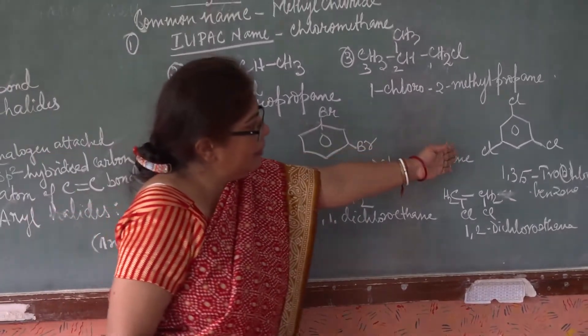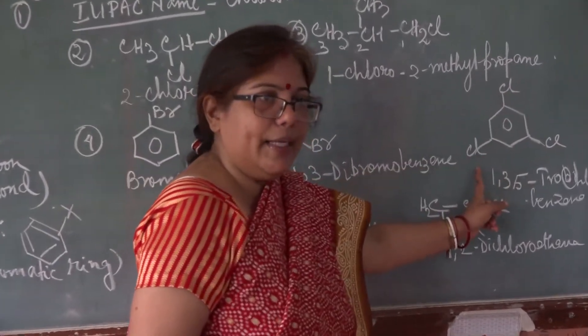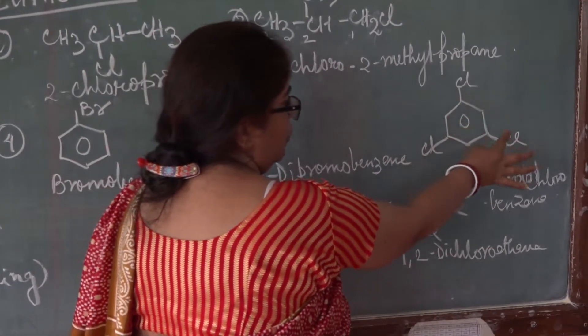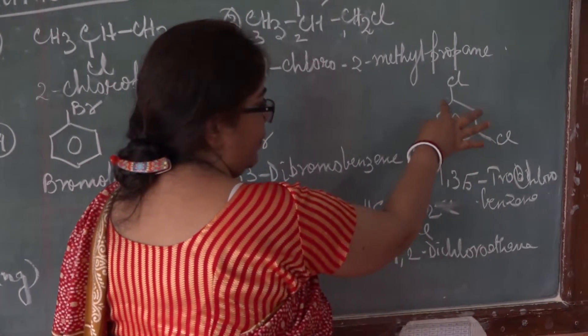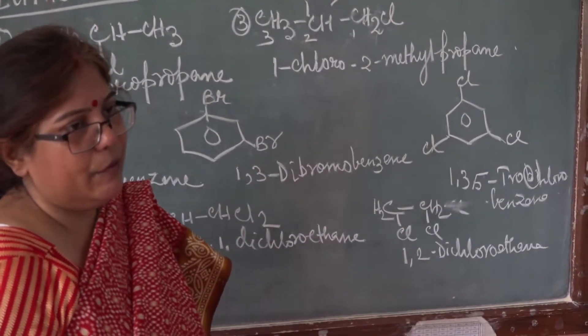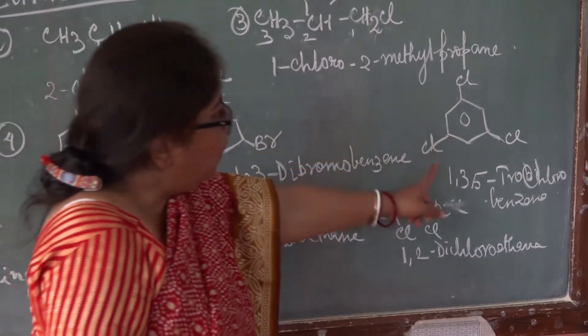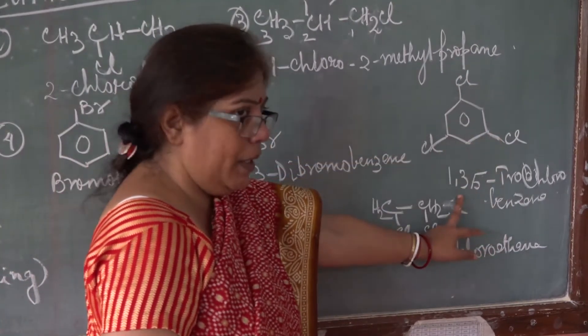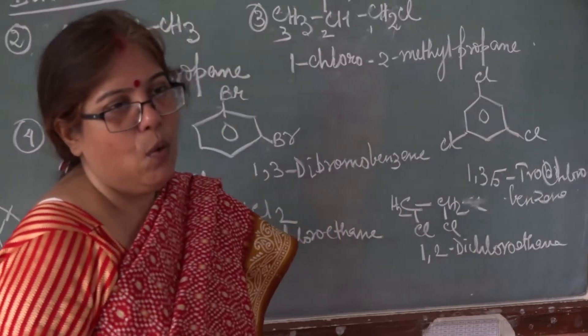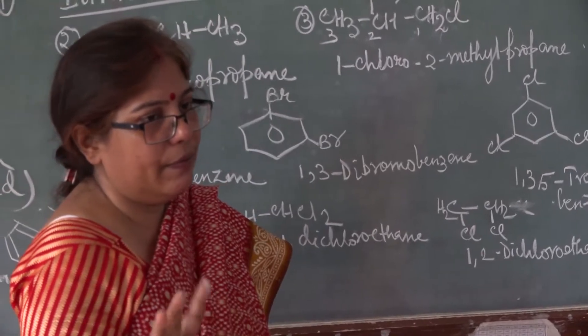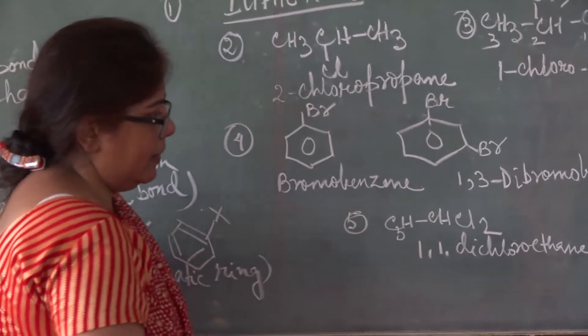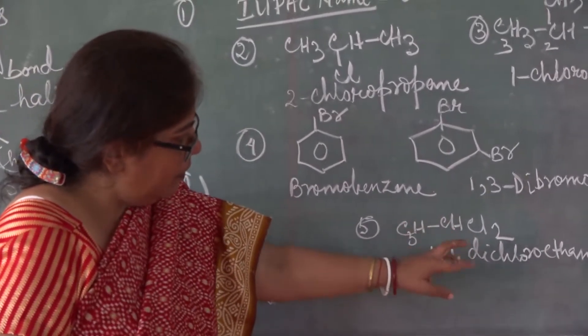Similarly, see this. Three chlorines are attached to the benzene ring. You are seeing that? It's attached. Position you give. One, two, three, four, five. So third position, first position, fifth position, Cl. So what will be the name? One, then three, comma, then five, trichlorobenzene. One, three, five, trichlorobenzene. Three chlorines are attached.